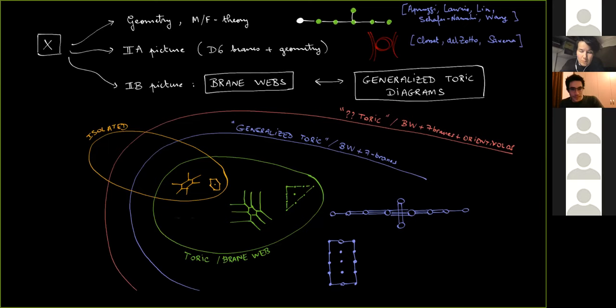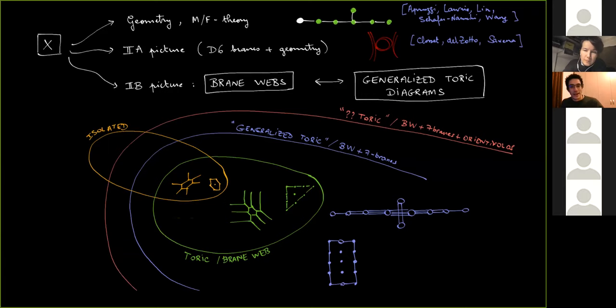On this map, standard brane webs are represented in orange — these are only five-branes. You never have infinite parallel five-branes, which realizes an isolated singularity. The five-brane web has a dual toric diagram, and the singularity X is a toric, isolated singularity. You can go beyond isolated singularities by adding parallel five-branes, giving a slightly larger class that is still toric but no longer isolated. I will consider what we call generalized toric diagrams, which include white dots — not only black dots on the sides.